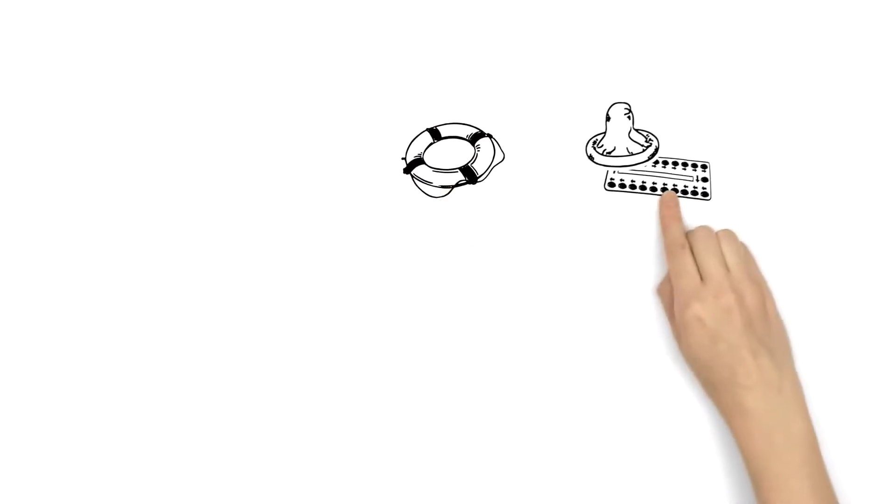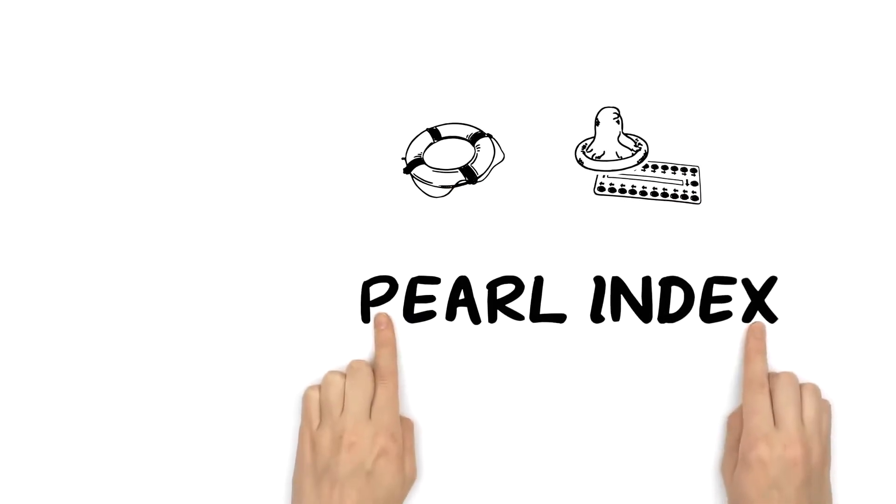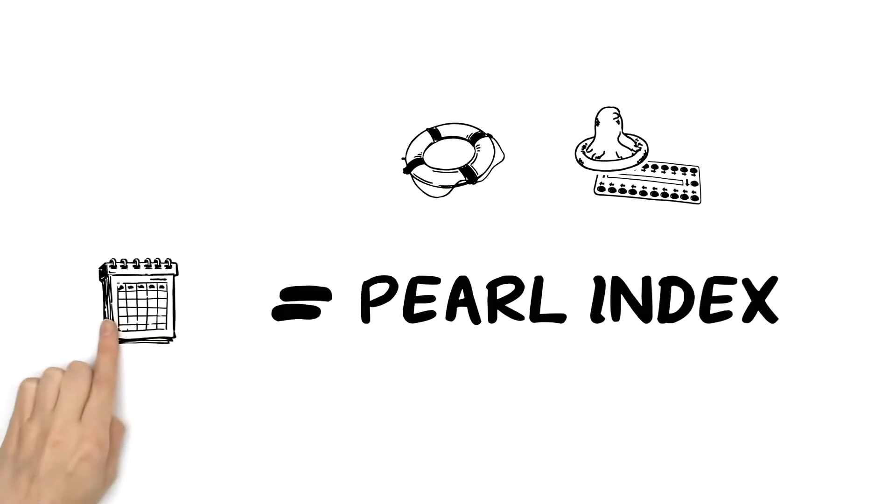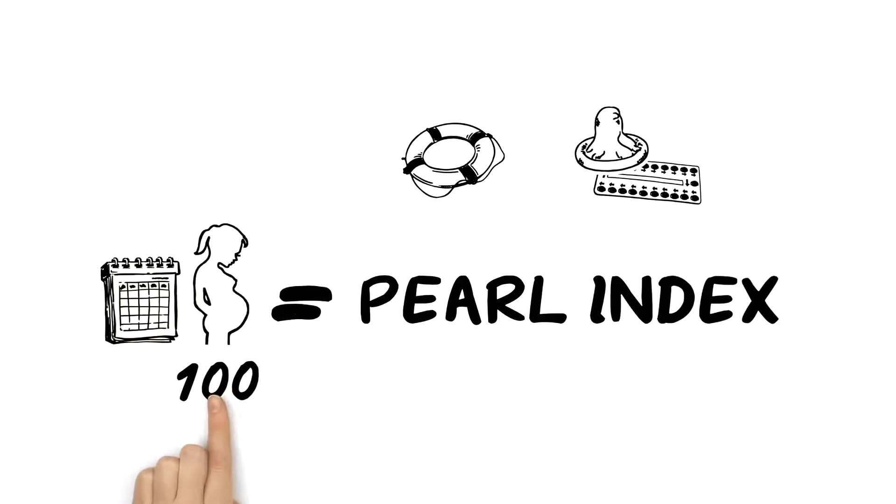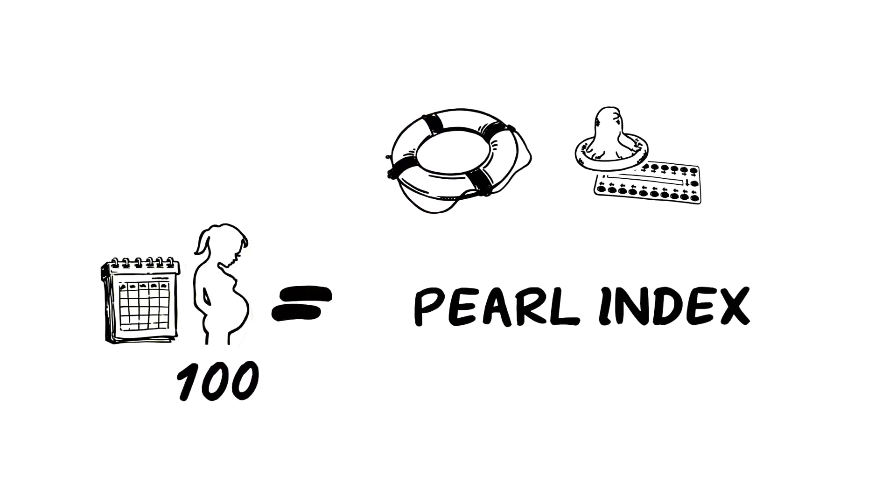You can check the safety of a method through the PEARL index, which calculates the annual number of pregnancies per 100 women. The safer a method, the lower the value.